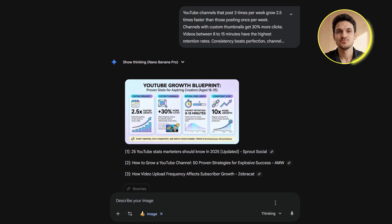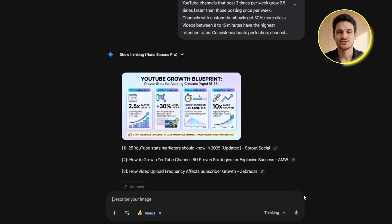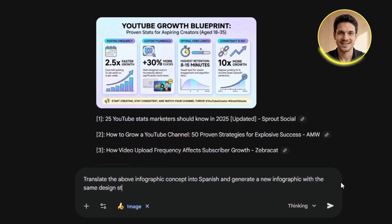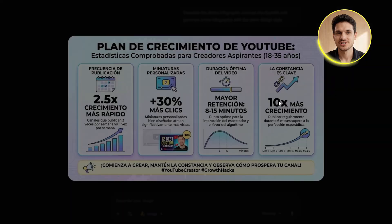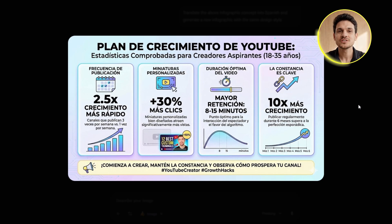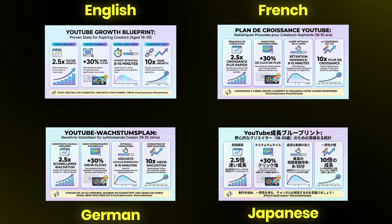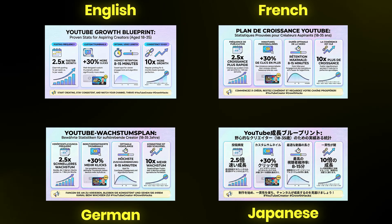Here's something really cool that most people don't know about: Nano Banana Pro works incredibly well with multiple languages. If you need to create infographics for international audiences, this is a massive time saver. I'm going to take the same YouTube statistics and ask Gemini to create a Spanish version. I'll type: "Translate the above infographic concept into Spanish and generate a new infographic with the same design style." Within seconds, I have a Spanish version with perfect text rendering. And you can do this with virtually any language, which opens up huge opportunities if you're creating content for global audiences. I've tested this with French, German, and even Japanese, and the results are consistently impressive.